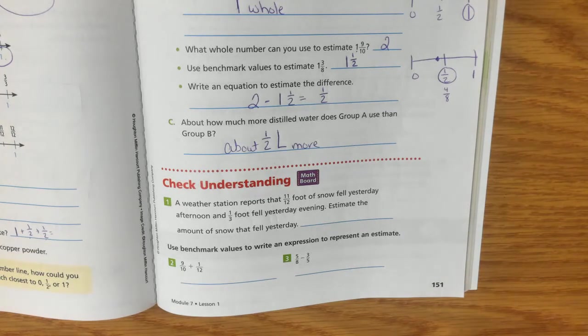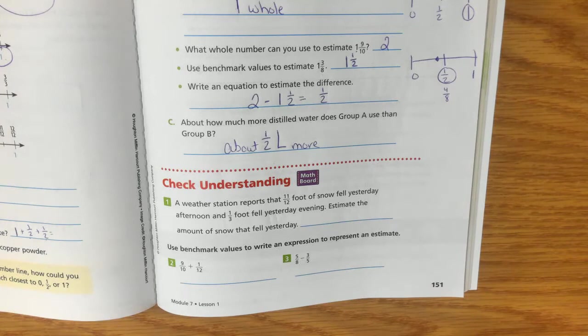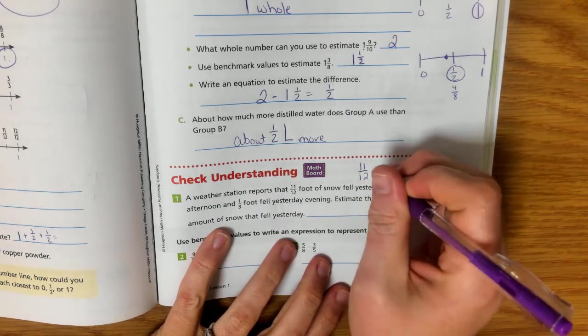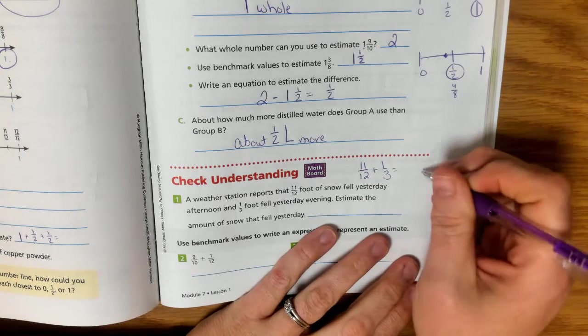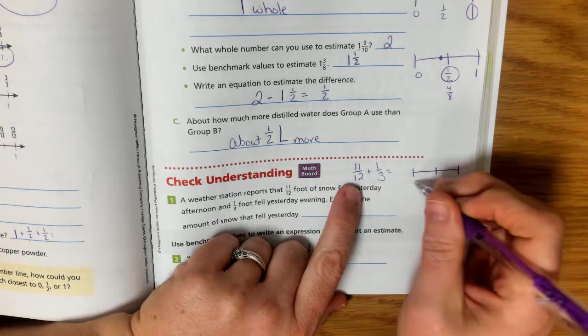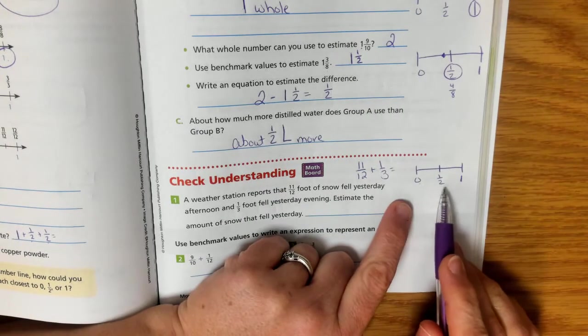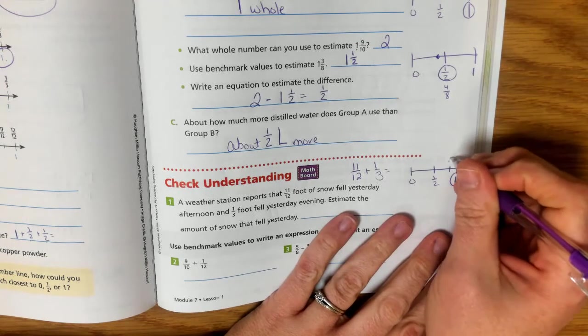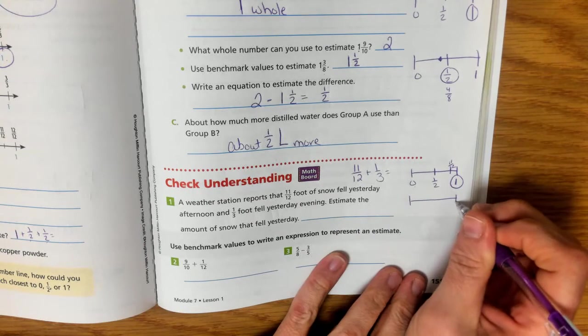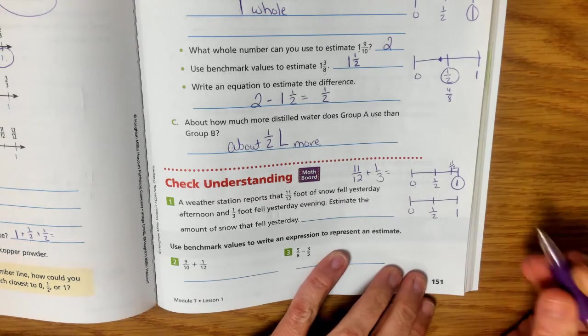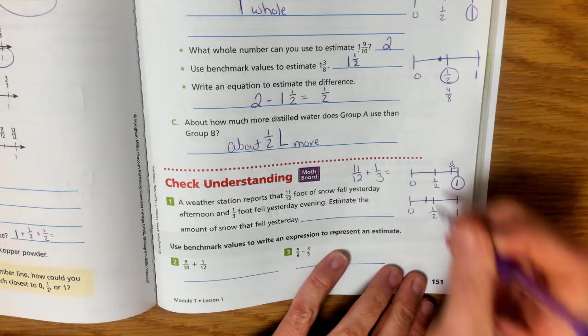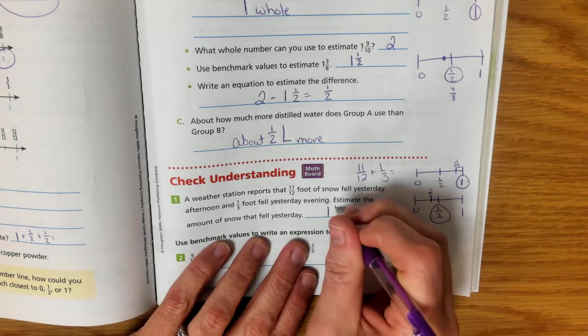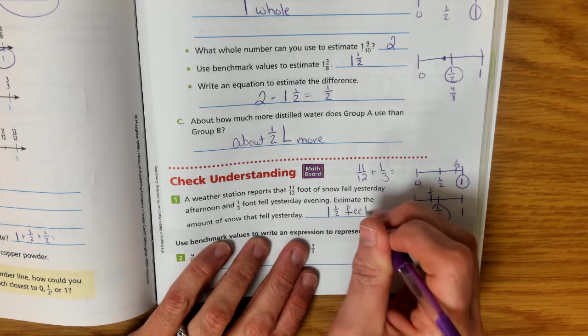Alright, a weather station reports that 11 twelfths foot of snow fell yesterday afternoon and 1 third foot fell yesterday evening. Estimate the amount of snow that fell yesterday. So we want this one would be an addition, right? Because we want to know how much total snow fell. So if we have our number lines, remember this is an estimate. 11 twelfths is going to be closer to 0, 1 half, or 1 whole. 11 twelfths is going to be closer to 1 whole. Because 11 twelfths would be way up here. 1 third. 1 third would be here somewhere. So 1 third is closer to 1 half. So 1 whole and 1 half would be 1 and 1 half feet of snow fell yesterday.